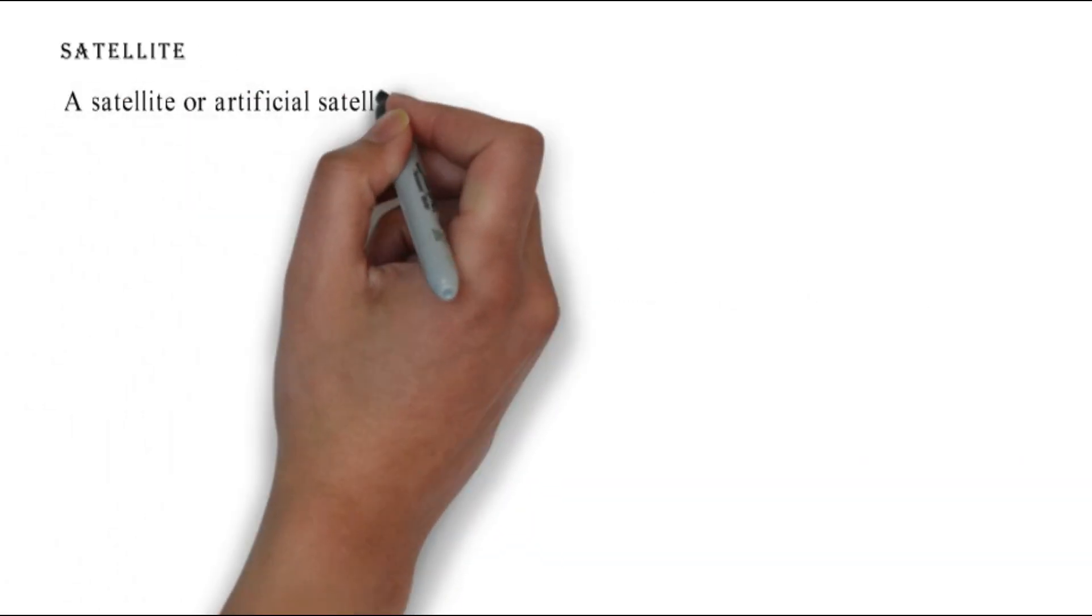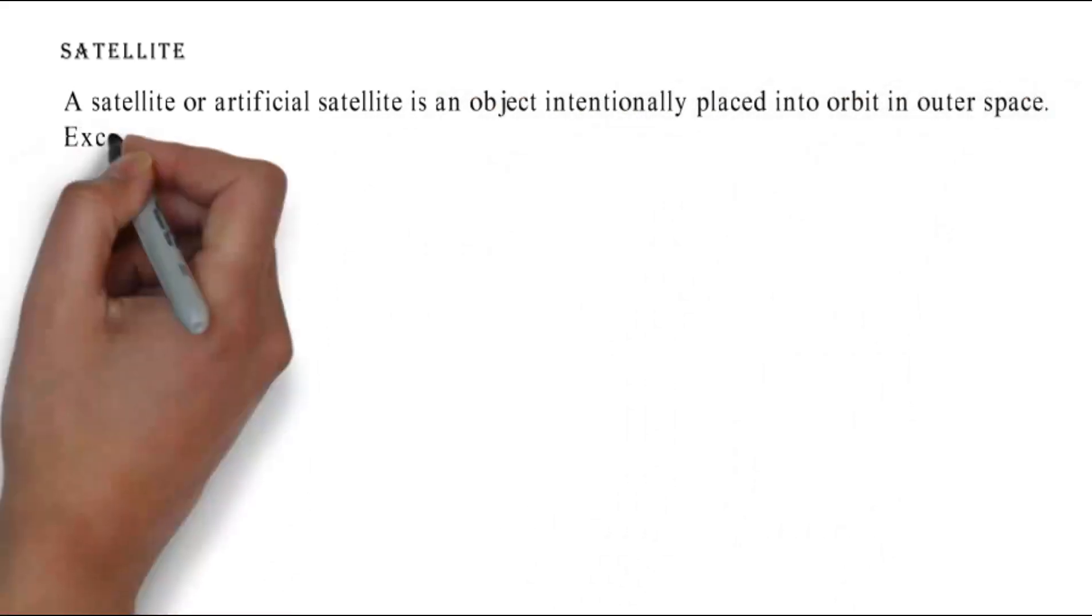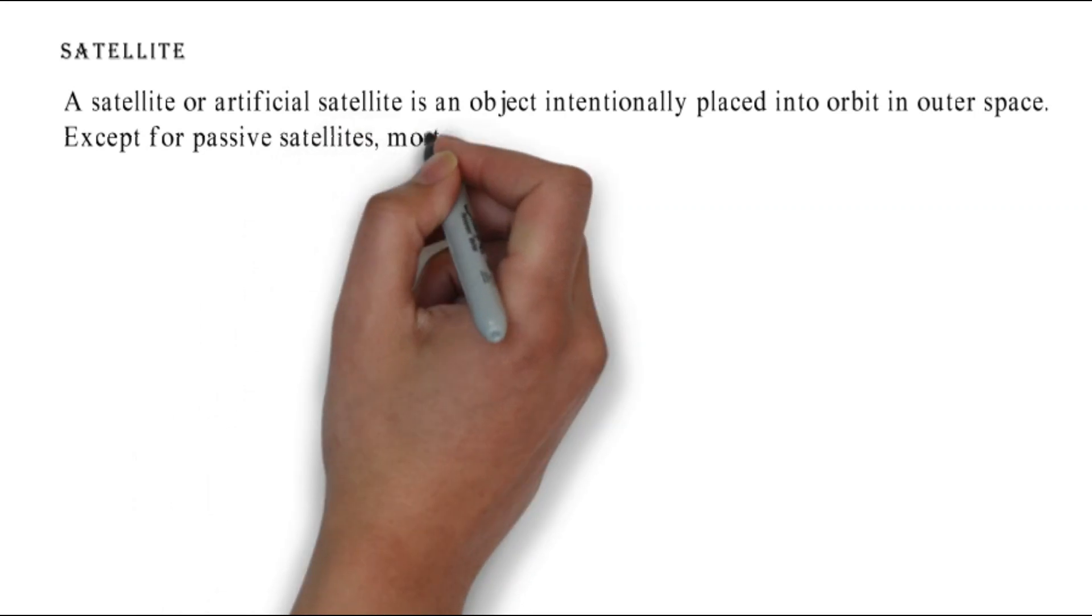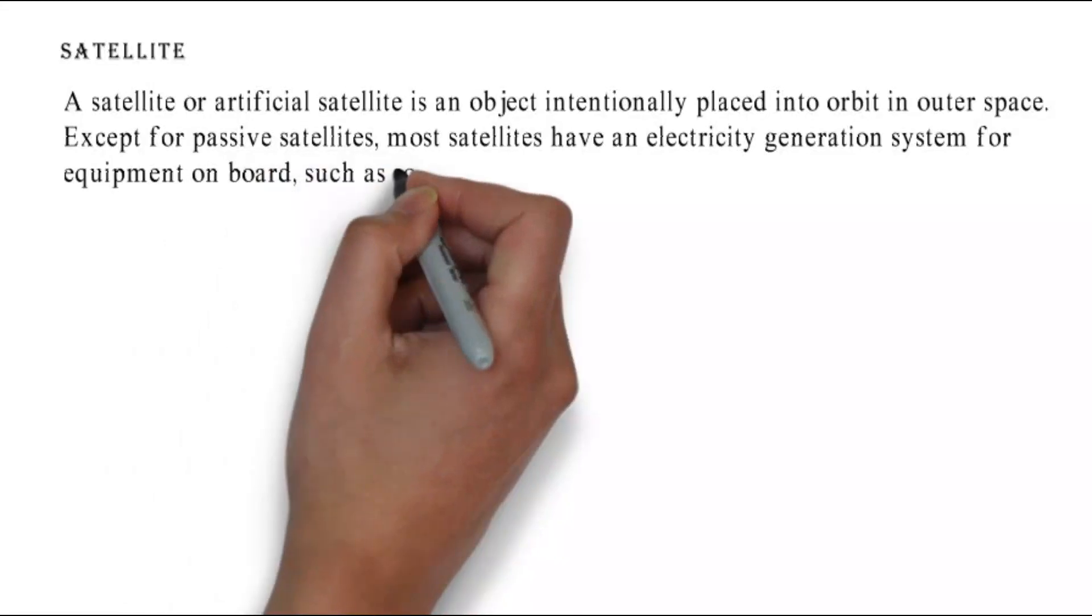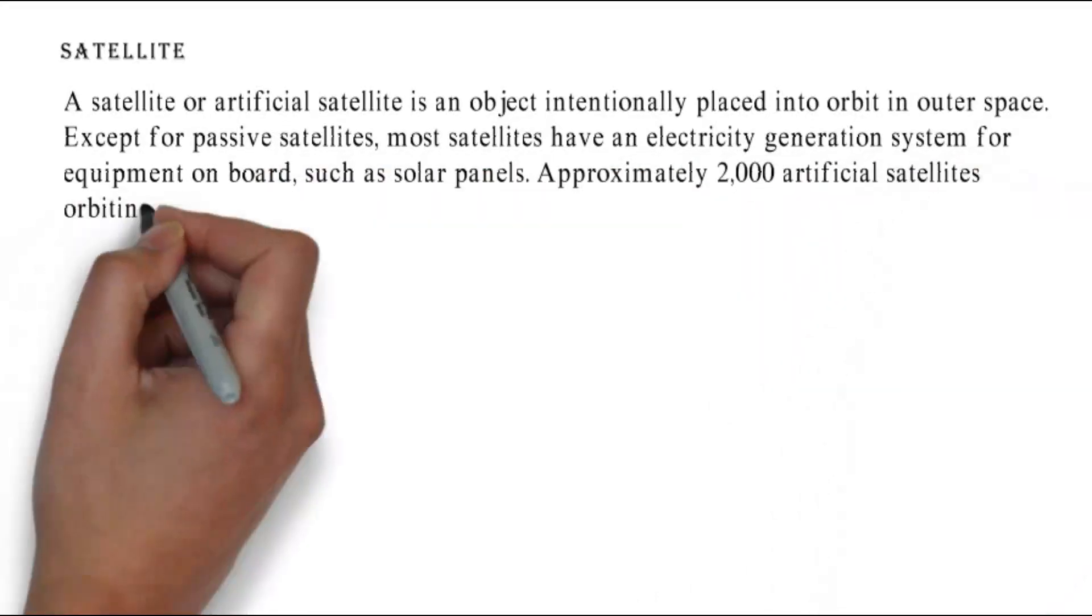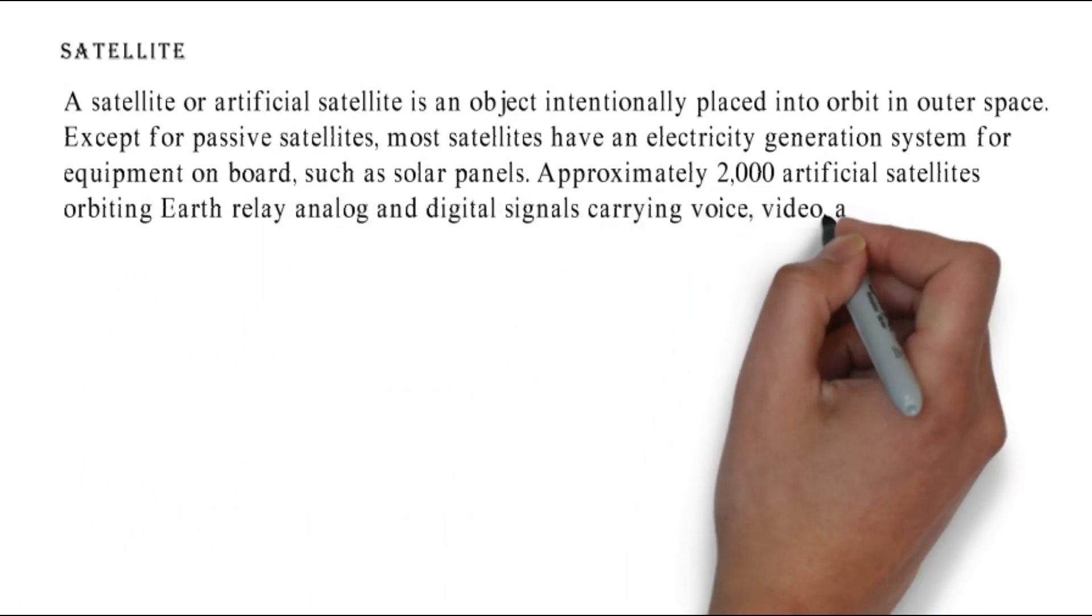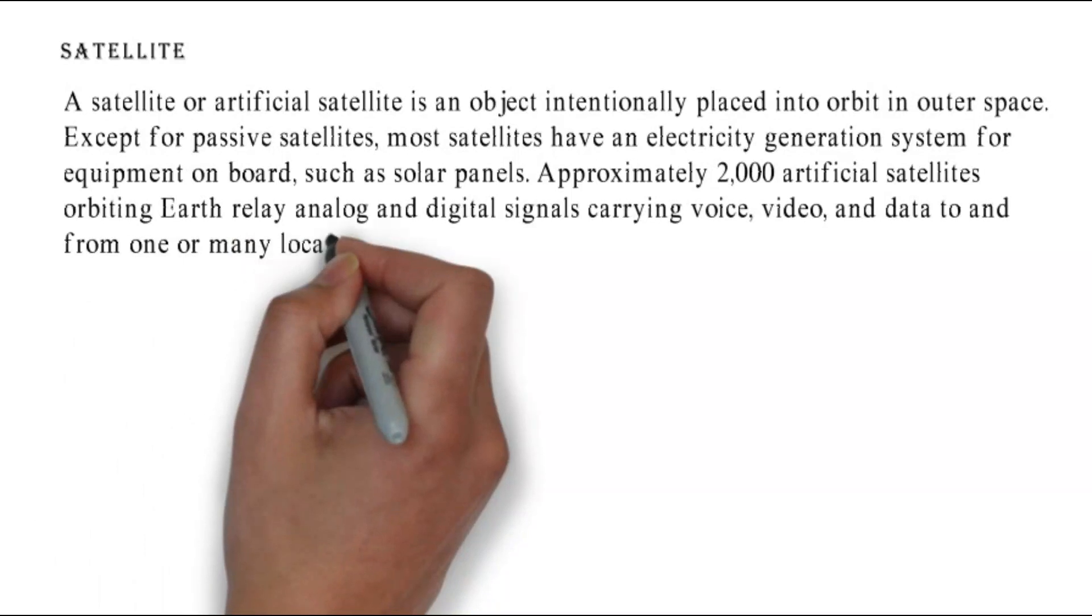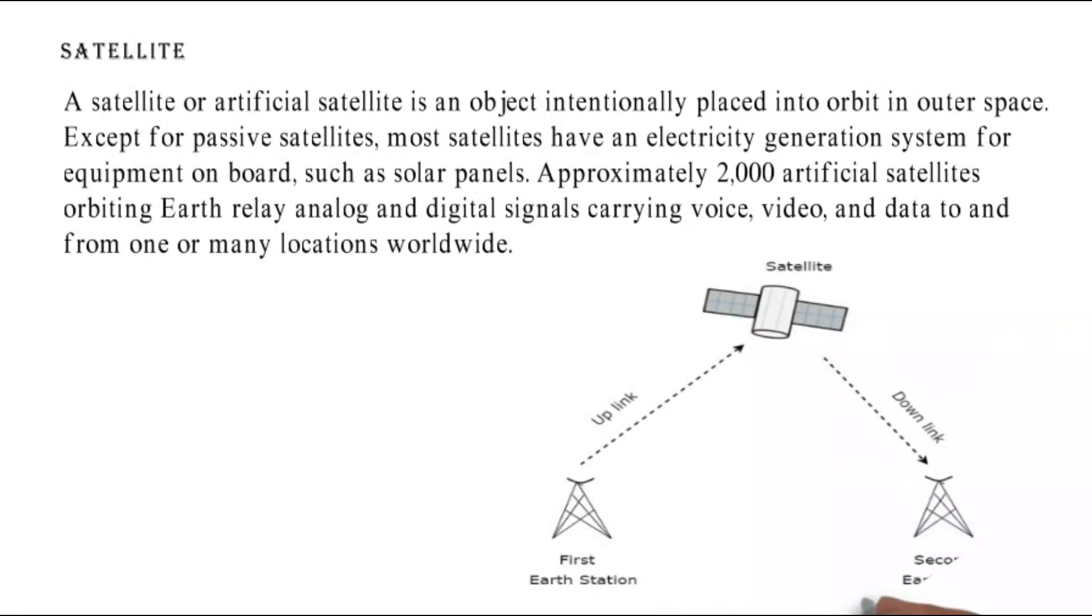Satellite. A satellite or artificial satellite is an object intentionally placed into orbit in outer space. Except for passive satellites, most satellites have an electricity generation system for equipment on board such as solar panels. Approximately 2,000 artificial satellites orbiting Earth relay analog and digital signals carrying voice, video, and data to and from one or many locations worldwide.